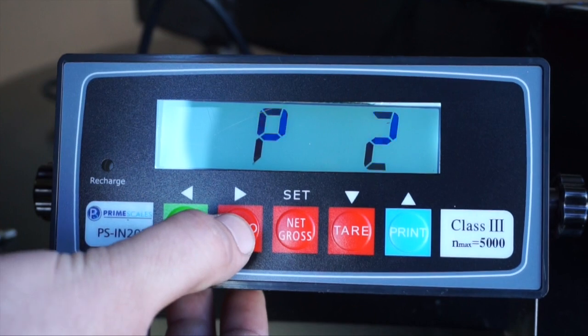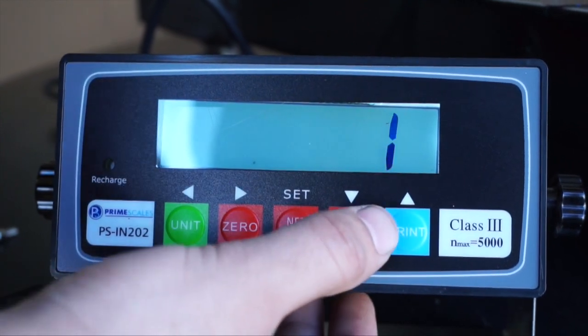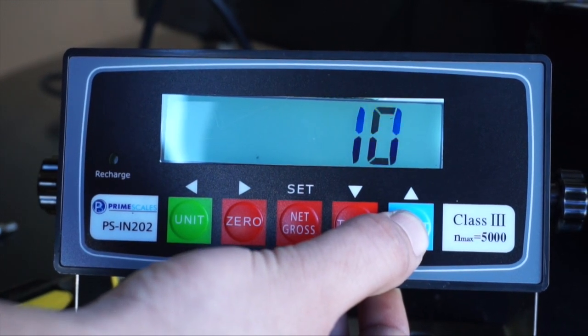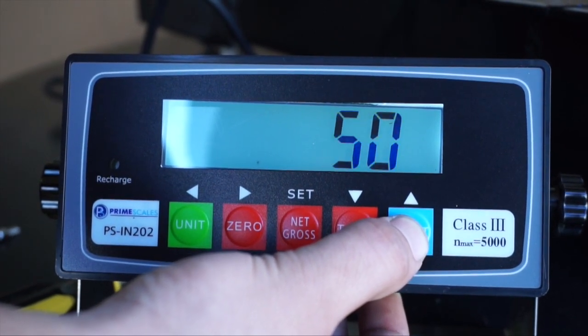Press print to move to P2. Parameter 2 or P2 sets the accuracy of the scale. Enter P2 by pressing the zero button.